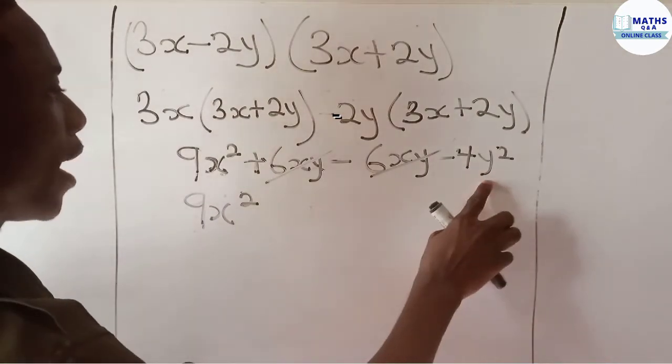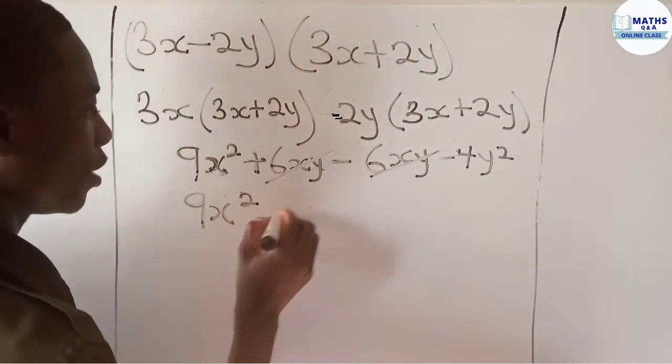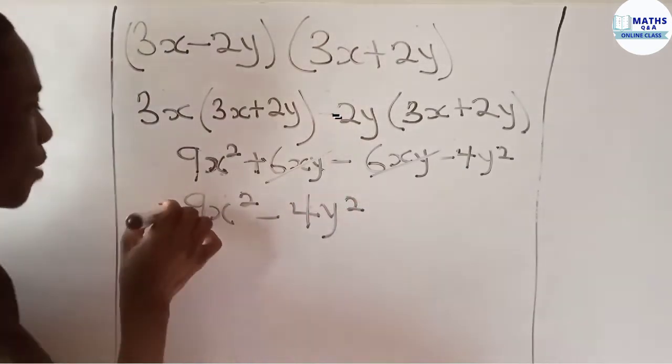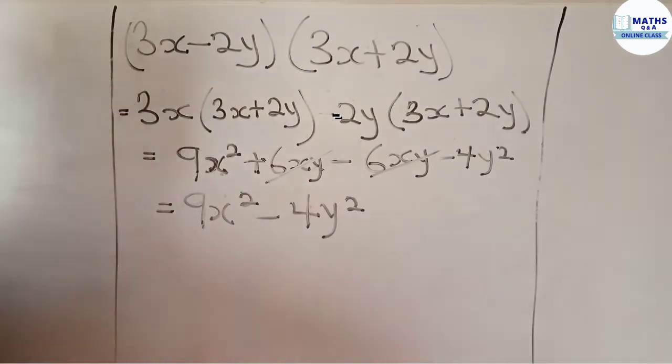And then it's left 4y squared, which is negative, so you write negative 4y squared. This becomes the answer for expand and simplify the question 3x minus 2y multiplied by 3x plus 2y.